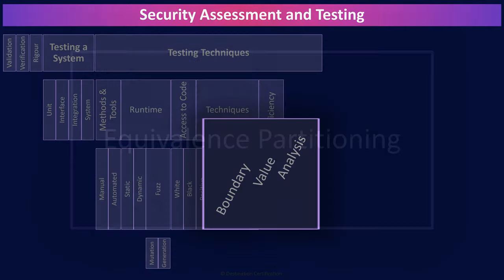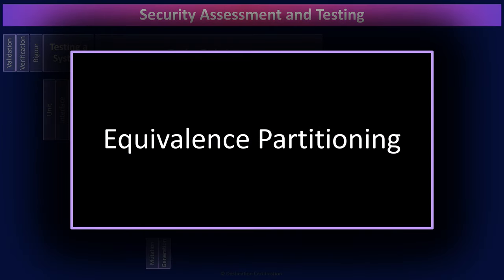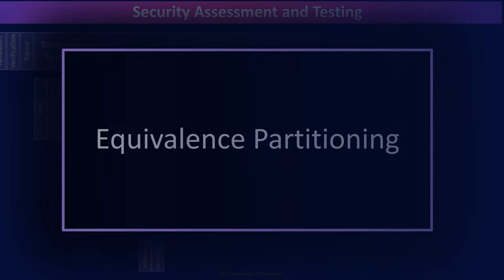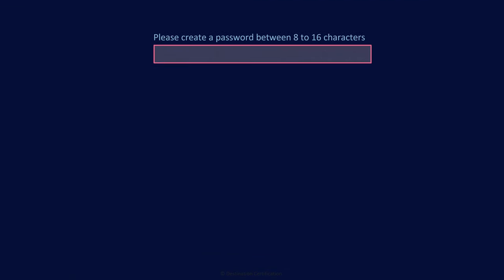In equivalent partitioning, inputs are divided partitioned into groups which exhibit the same behavior. Test cases are then written to cover each partition. And here's a diagram to help you visualize the difference between these two techniques.